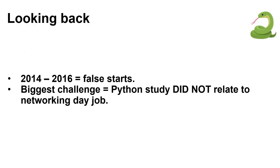Looking back, I had a lot of false starts. I think that's where a lot of people feel pain — they try to learn these new things, see everyone saying 'oh it's so easy to learn Python,' and feel like there's something wrong with them. What I mean is that Python is relatively easy to read once you've got the basics, but it is hard to get those basics. The biggest challenge was that the Python study didn't relate to what I was doing. Now, because automation is becoming more front and centre, APIs are on networking kit — you can look at using code to interact with devices a lot easier.